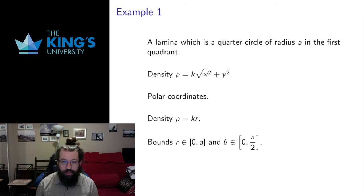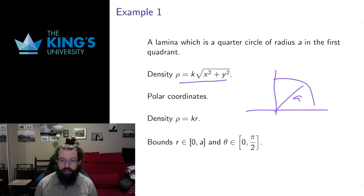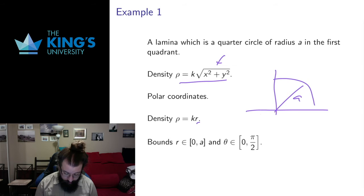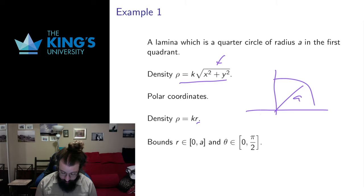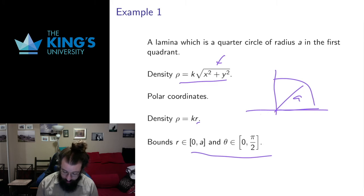Let me start with a lamina example first. This is a quarter circle of radius A in the first quadrant and it has this density. Since it's a quarter circle and the density looks like it has circular symmetry, polar coordinates seem appropriate. Square root of x squared plus y squared in polar coordinates is just the radius term. This quarter circle can be described very nicely in polar coordinates, with bounds 0 to A in the radius and 0 to pi over 2 in the angle to get the first quadrant.